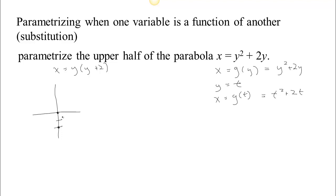We know this is a parabola that opens to the right, because as y gets bigger the x values get bigger. The vertex lies on the line of symmetry between the two y-intercepts. Halfway between 0 and negative 2 is negative 1. Plugging in y equals negative 1 gives negative 1 times 1, so the vertex is at the point (negative 1, negative 1). The parabola looks like this.